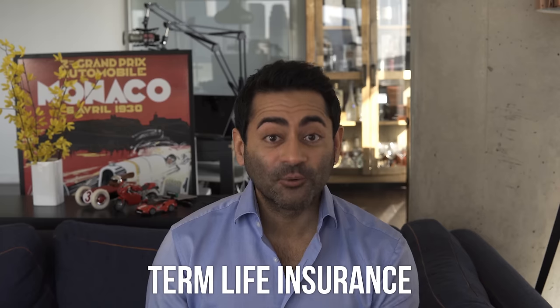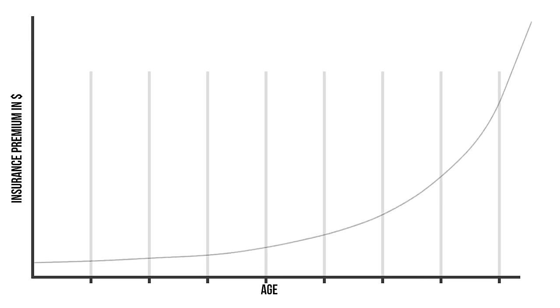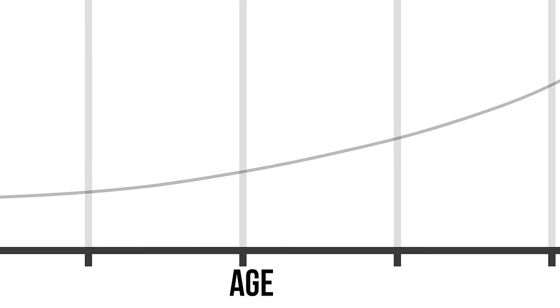Now, in reality, people don't buy one-year life insurance policies. This brings us to our first type of life insurance: term life insurance. So if we take our graph and separate it into 10-year intervals, an insurance company might say, instead of just increasing the price every year, we'll set a static cost for the entire 10-year period or term.